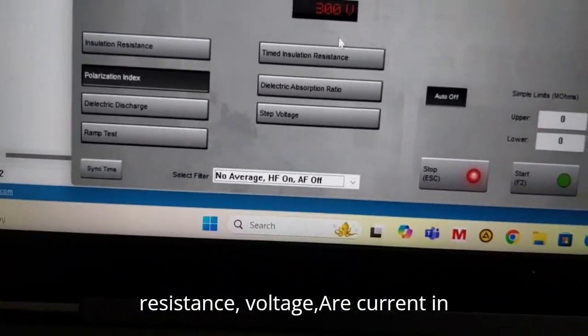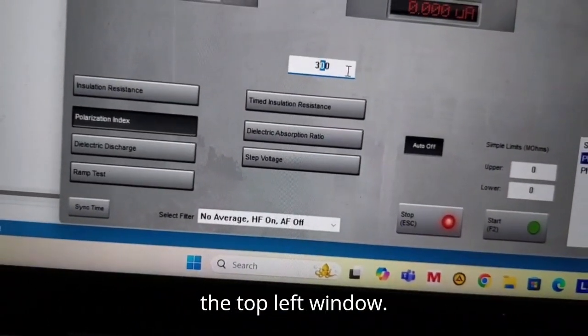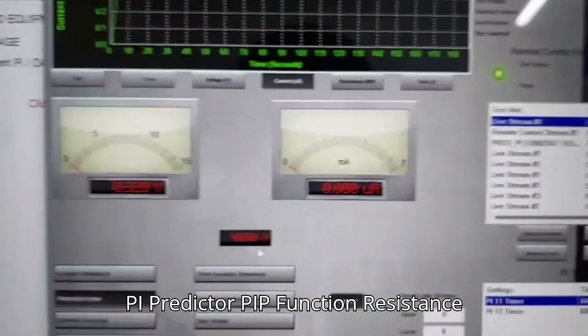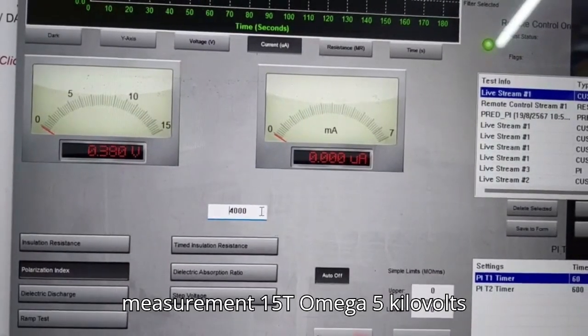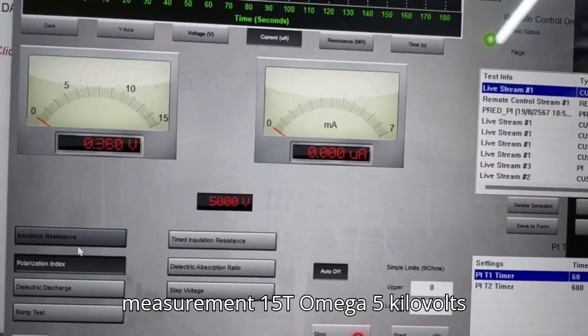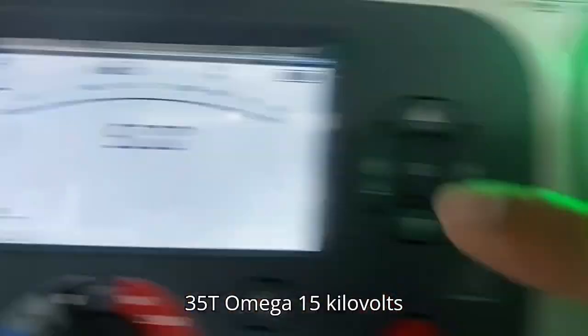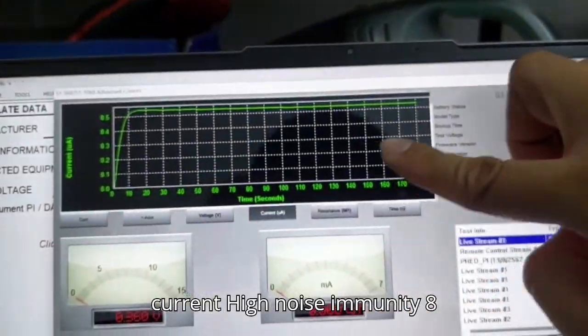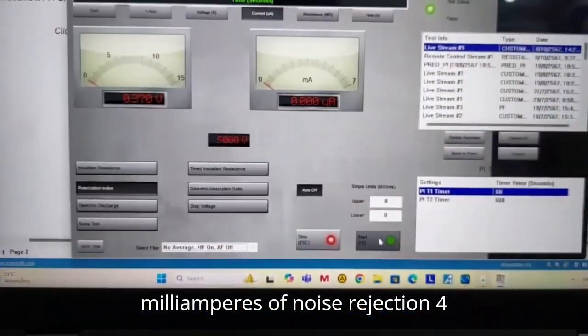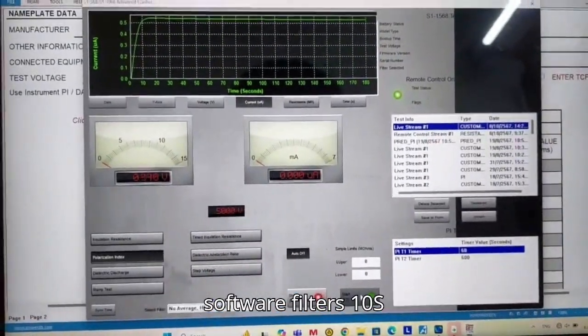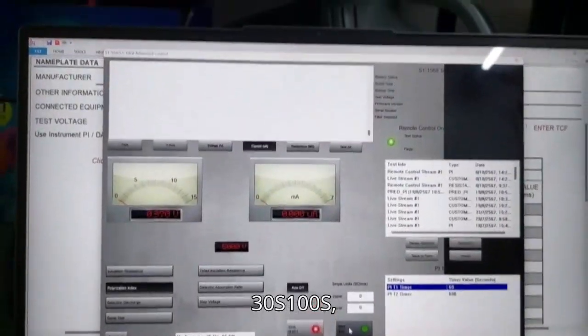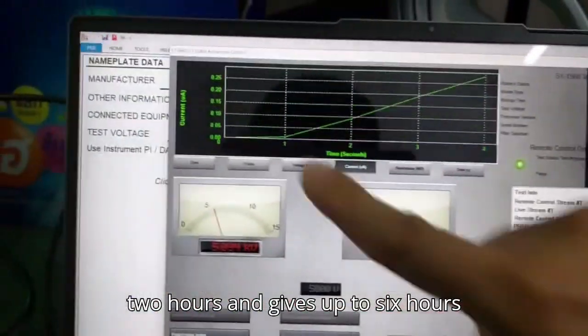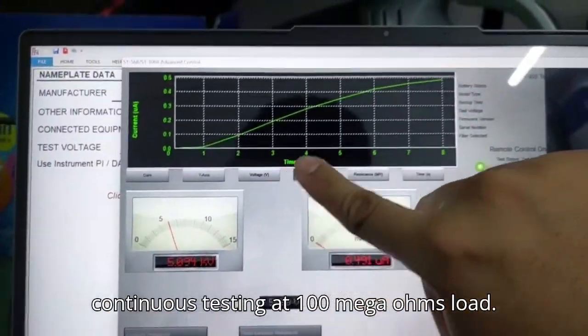Features and benefits: PI predictor (PIP) function, resistance measurement 15 teraohms at 5 kilovolts, 35 teraohms at 10 kilovolts, 35 teraohms at 15 kilovolts, high current 6 milliamperes short circuit current, hot noise immunity 8 milliamperes of noise rejection, four software filters 10s, 30s, 100s, 200s. Li-ion battery charges in two hours and gives up to six hours continuous testing at 100 megaohms.